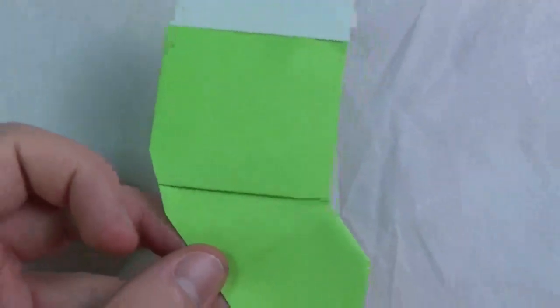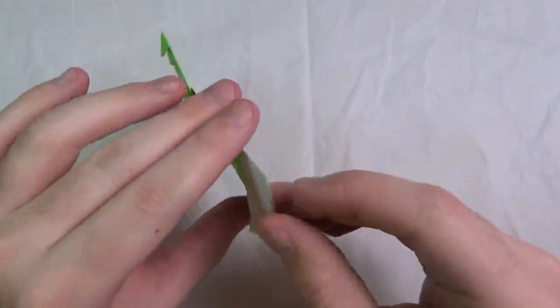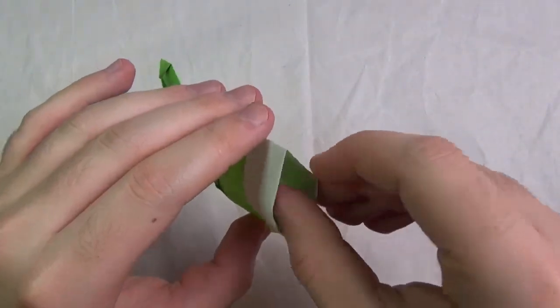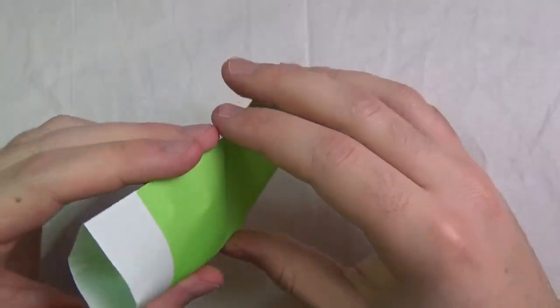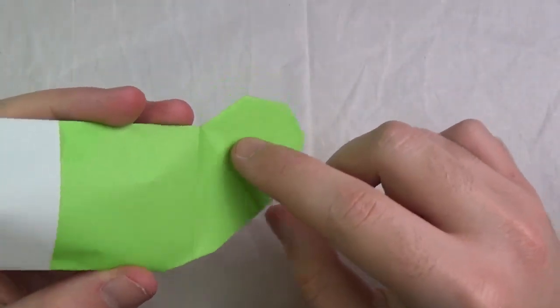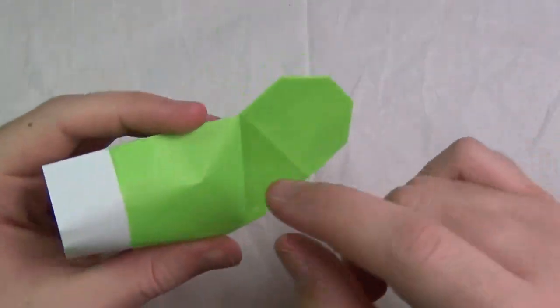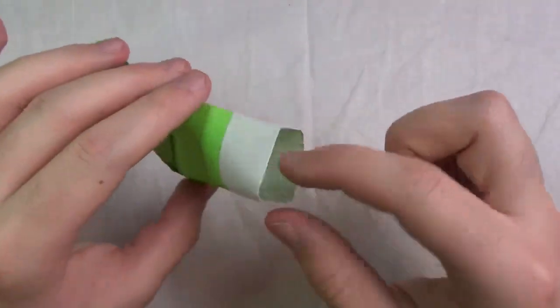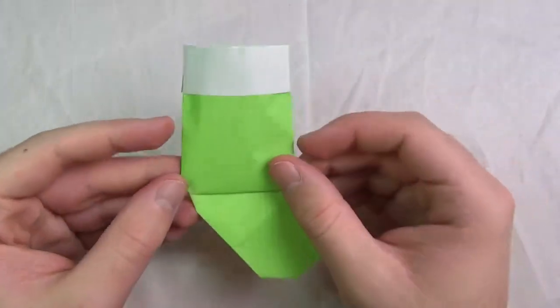So here it is. Here is our completed stocking. So all you do is just open it up. And for some reason it doesn't open. This part doesn't open up for some reason. But that's alright. So it only opens up to this edge. But you can put plenty of stuff in there.